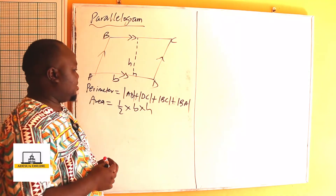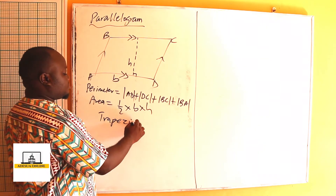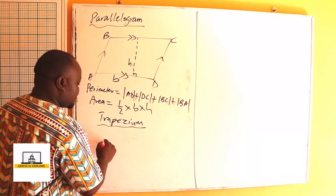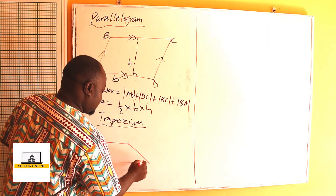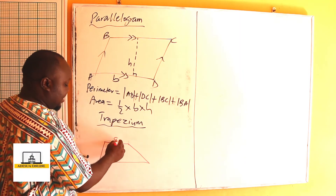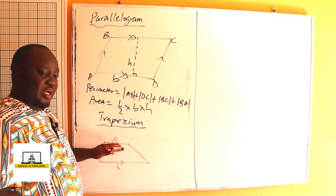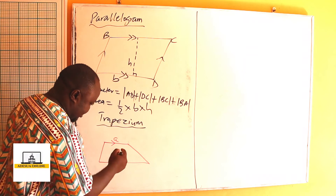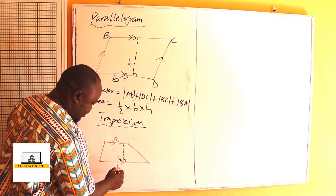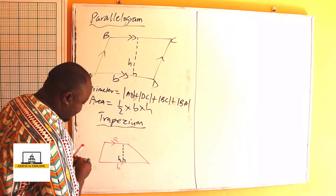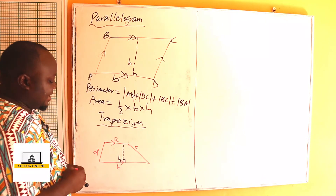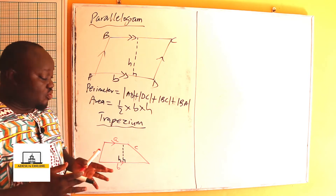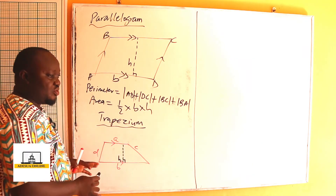Now we can move on to the trapezium. A trapezium is also a four-sided figure. So assuming this is a trapezium with sides A and B parallel to each other — they are both parallel, but one length of the parallel side is longer than the other. If this is the height H and the other sides are C and D, a trapezium is a four-sided plane figure which has one pair of opposite sides parallel but unequal — they don't have the same length.